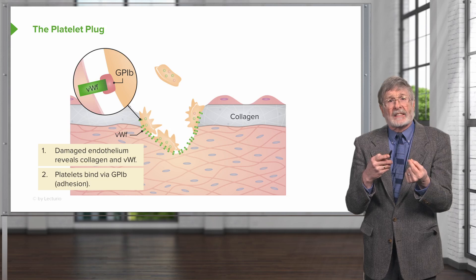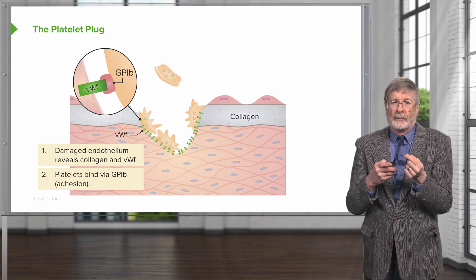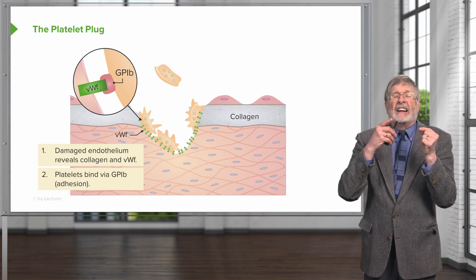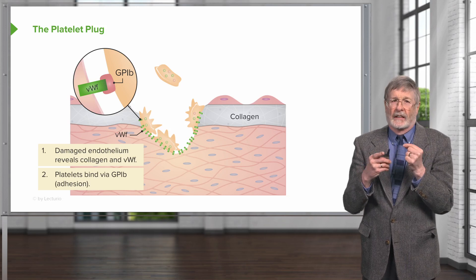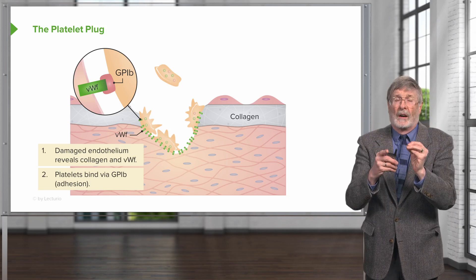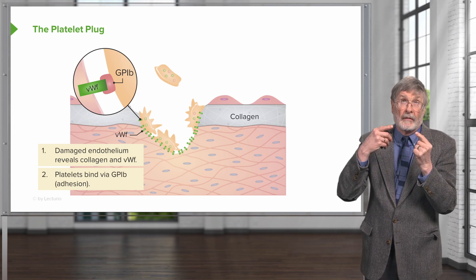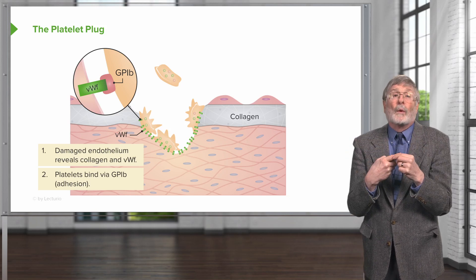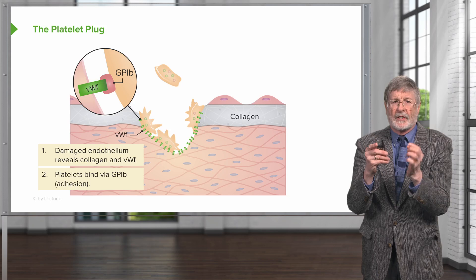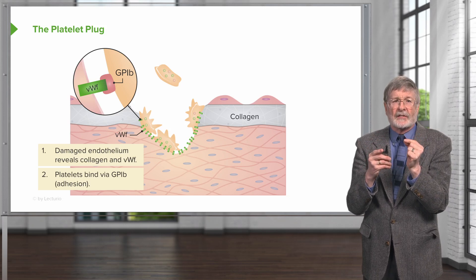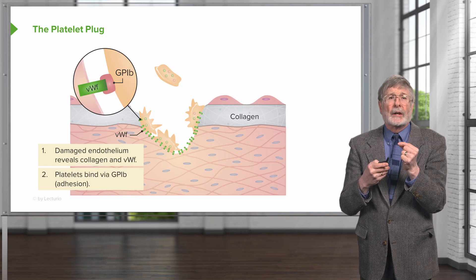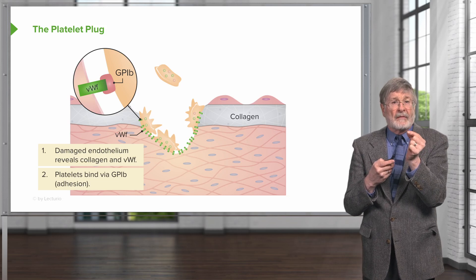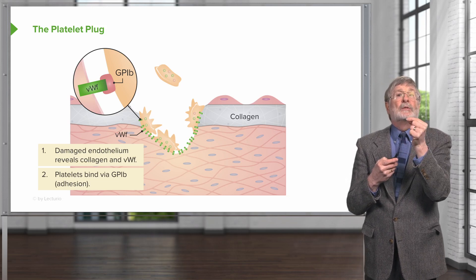The platelets are able to interact with von Willebrand factor through their surface receptor glycoprotein 1b. In the next few slides there will be lots of details — don't get too bogged down in them. They're very important because they represent therapeutic targets, but it can become overwhelming. Platelets will initially adhere to the von Willebrand factor that's been exposed by losing the endothelium.